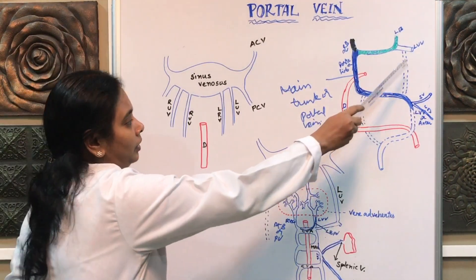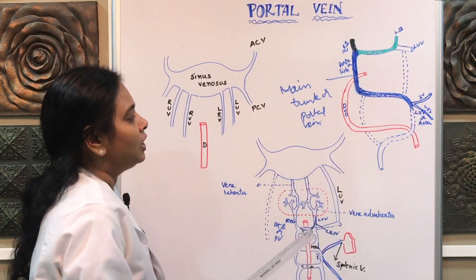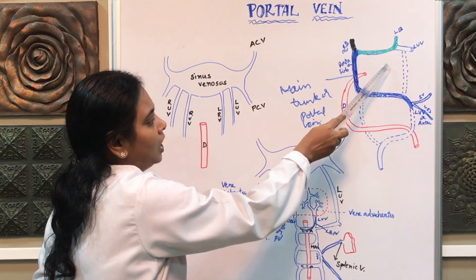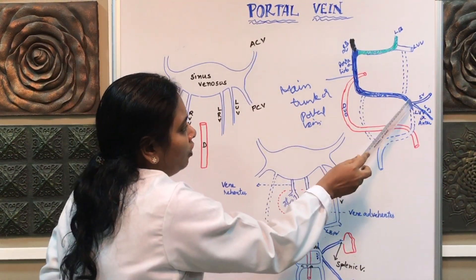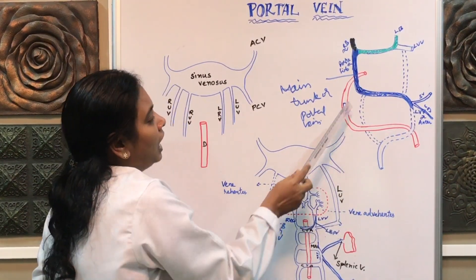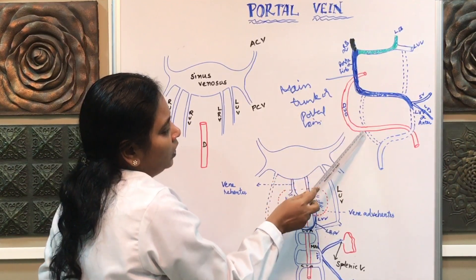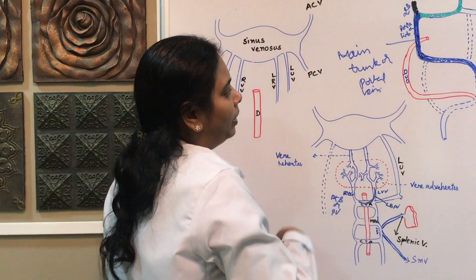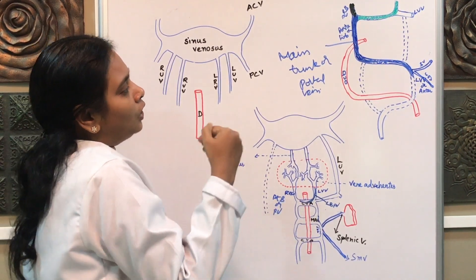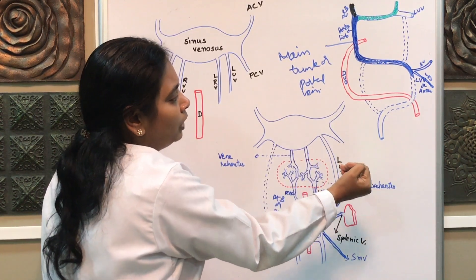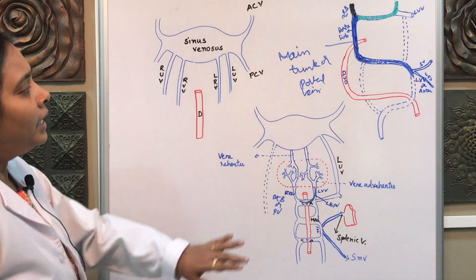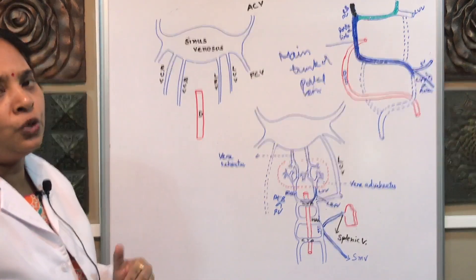Once the splenic vein and superior mesenteric vein join this left vitelline vein, major portions of the left vitelline and right vitelline veins disappear. The upper part of the left vitelline vein above the middle dorsal anastomosis disappears. The lower part of the left vitelline vein below the junction with the splenic and superior mesenteric veins also disappears. The lower portion of the right vitelline vein below the middle dorsal anastomosis also disappears. The remaining persistent structures will develop the portal vein.